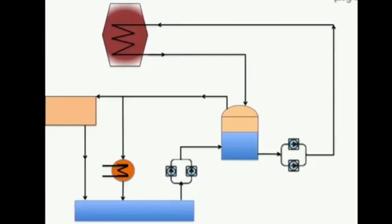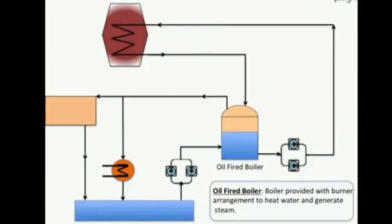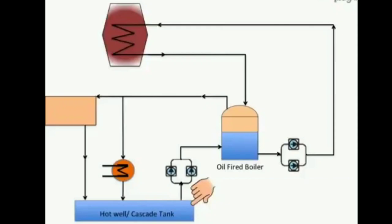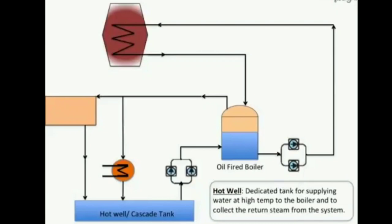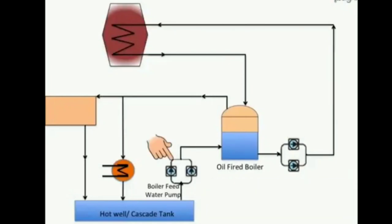We will start with the most important component of the system: an auxiliary boiler, which is provided with a burner arrangement to heat water and to generate steam. The hot well or casket tank is a dedicated tank for supplying water at high temperature to the boiler and to collect the return steam from the system.